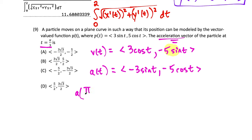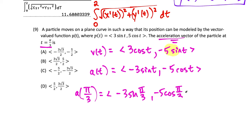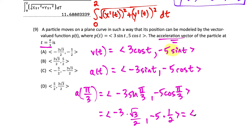Plugging in pi over 3: the acceleration vector is (negative 3 sin(pi/3), negative 5 cos(pi/3)). Since sin(pi/3) equals radical 3 over 2, the x component is negative 3 times radical 3 over 2. Since cos(pi/3) equals one-half, the y component is negative 5 halves. This matches choice A.